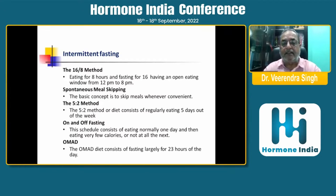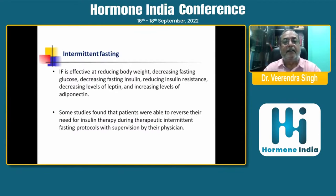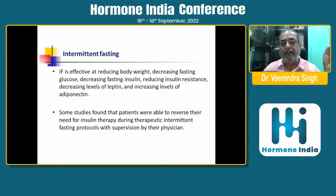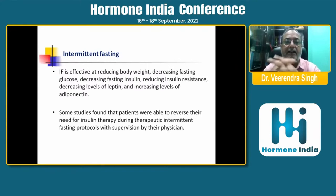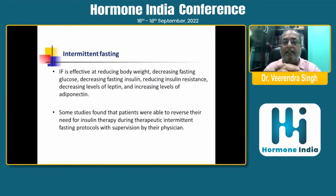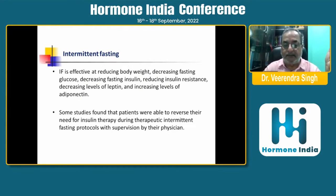The OMAD diet consists of fasting for largely 23 hours of the day. Intermittent fasting is effective at reducing body weight, decreasing fasting glucose, decreasing fasting insulin, reducing insulin resistance, decreasing levels of leptin, and increasing levels of adiponectin. Some studies have found that patients were able to reverse their need for insulin therapy during therapeutic intermittent fasting protocols with supervision by their physician.